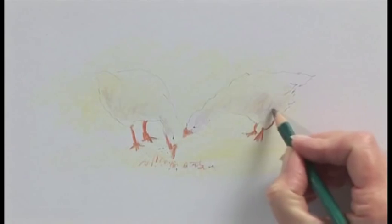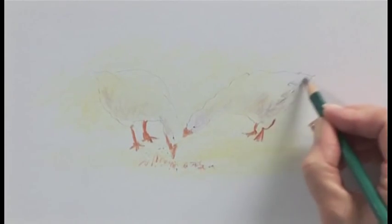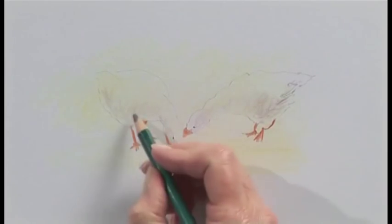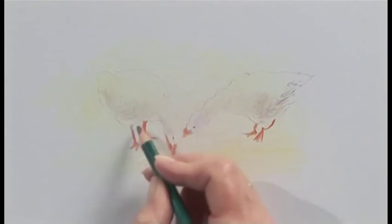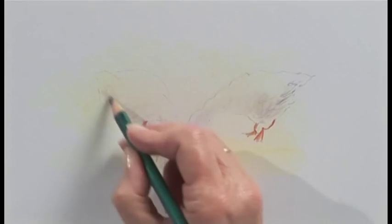We can use the point to create some little feathers. Just flick the pencil. Remember these are the soft artist pencils so it's for a nice kind of sketchy appearance so we can get the idea of some feathers there.